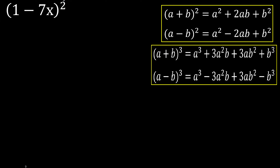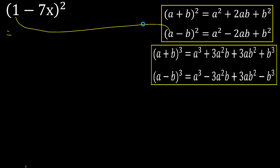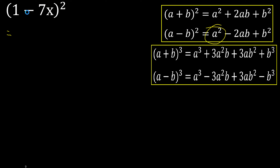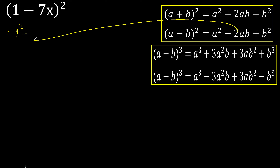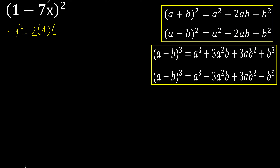Minus exponent 2, therefore like this: a is 1, b is 7x. Here 1 exponent minus ab, 1, b, b.